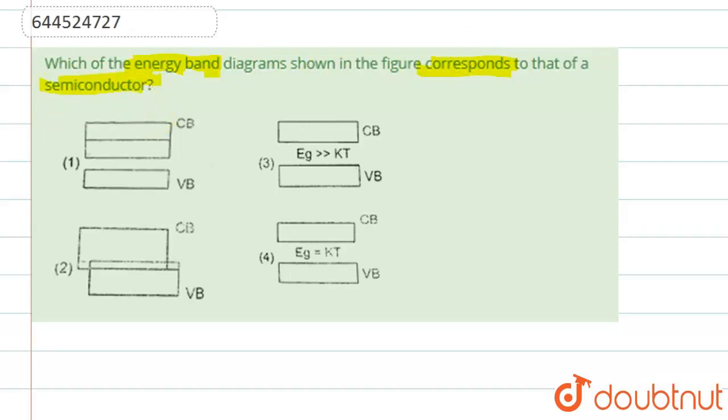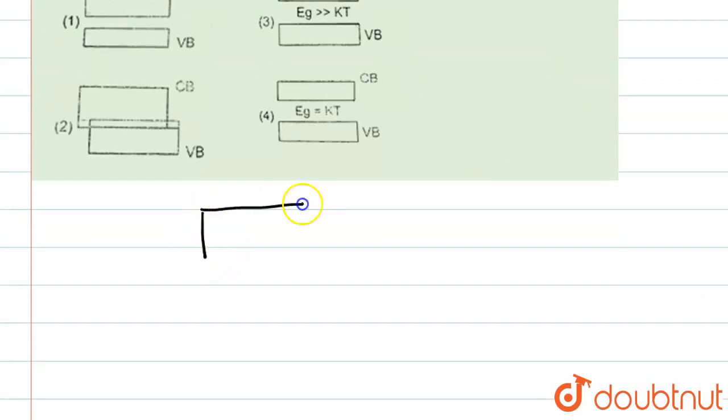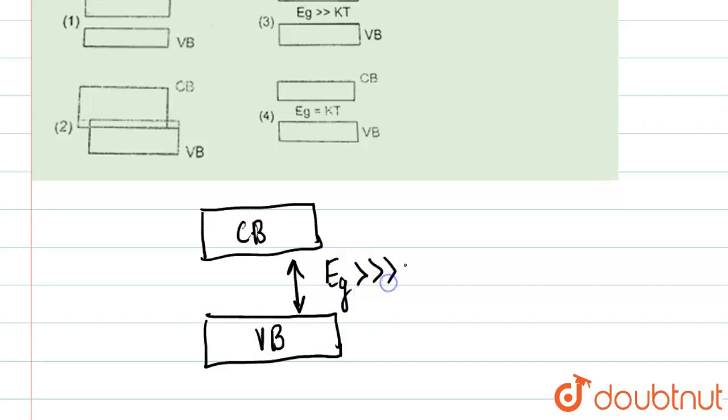So one thing we know that in semiconductor, basically in an insulator what happens is that for insulator, basically this is the conduction band and this is the valence band. For insulator what happens, we know that this valence band and conduction band has a very high gap. And basically Eg means gap between the valence is very very greater than KT.